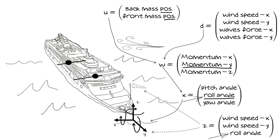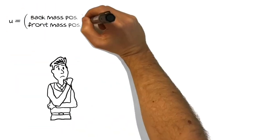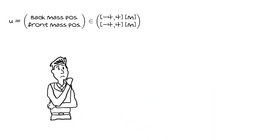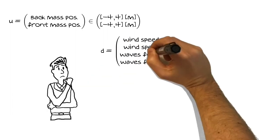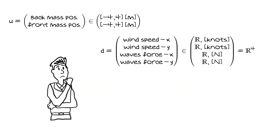The measurable output vector z includes the roll angle and the wind speed — here we can measure part of the state and part of the disturbance. Next, we have to find the range and units of the four horsemen. The stakeholders told us the masses can be moved up to 4 meters towards the left and right side of the ship. For the disturbance, wind speed and wave forces can be either positive or negative real numbers, so we indicate them with R.